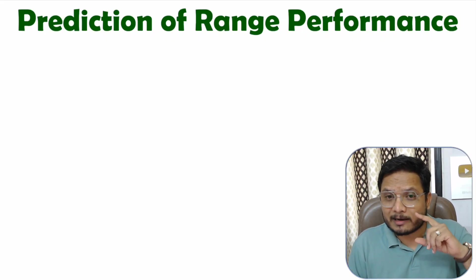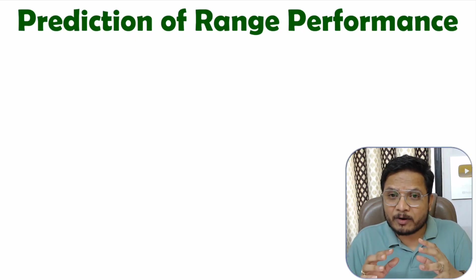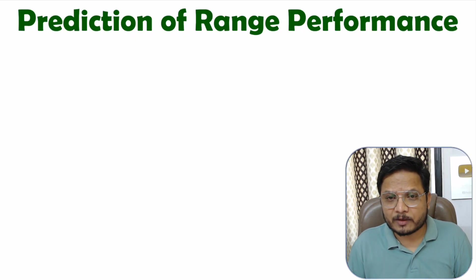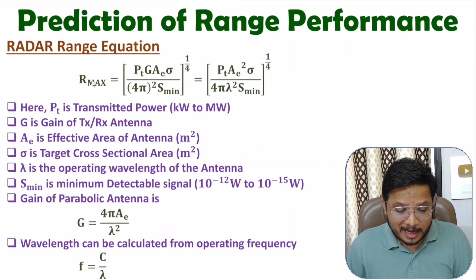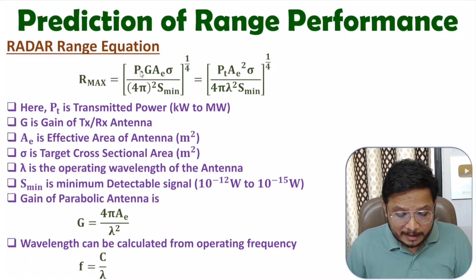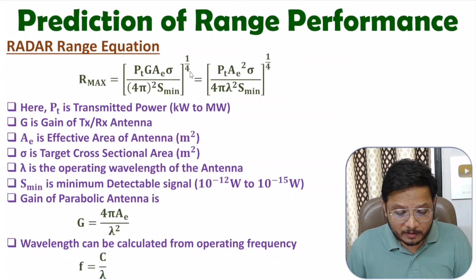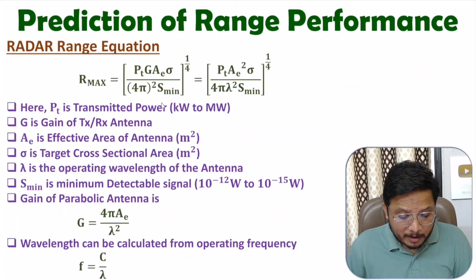In my earlier videos, I have derived the maximum range radar equation. That equation gives maximum range of radar as R_max equals Pt × G × Ae × sigma divided by 4π² × S_min, all to the power of 1 by 4. Here Pt is the transmitted power of the antenna.